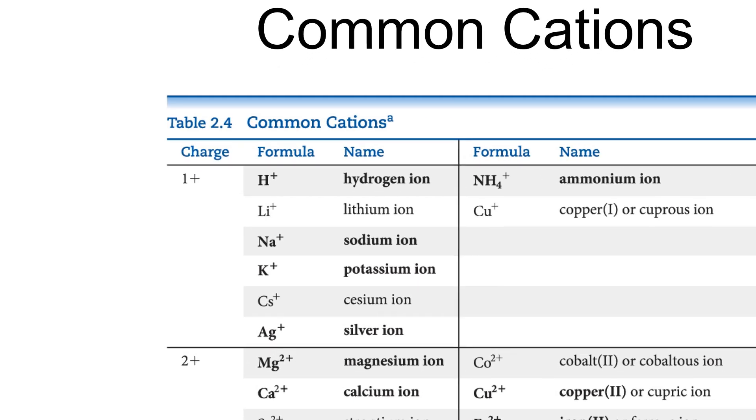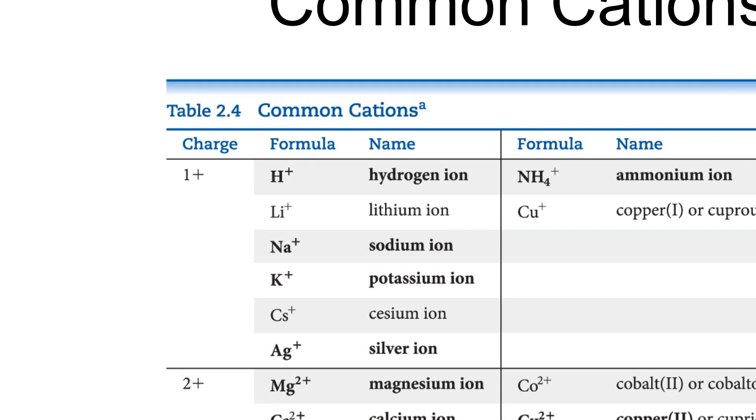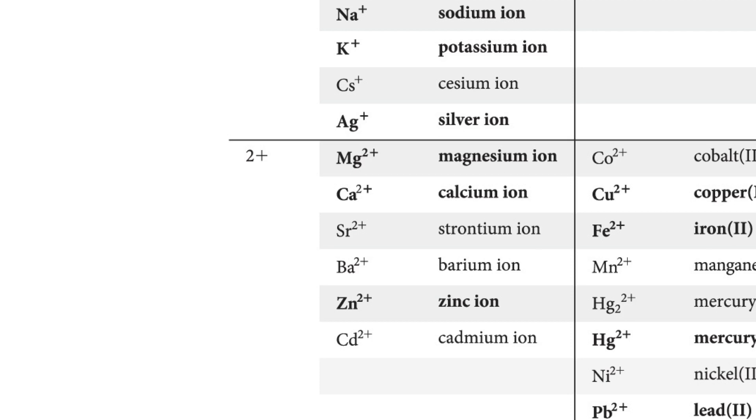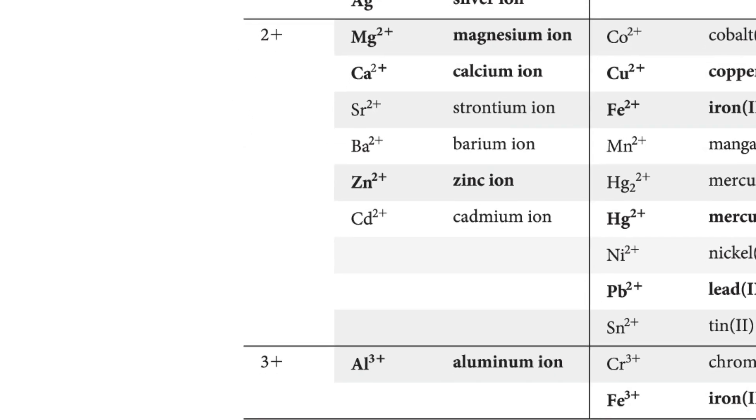So here are some common cations. Here are some positive ones. If you notice, many of these are from the first column, the first group. They all behave alike. So anything in the first group, first column, will tend to give away an electron and become positively one-charged. Likewise, the positive 2, many of those are from the magnesium and the calcium, strontium, barium. These are all from the second column. Not all of them, but many of them are. And it's that second column that they tend to become positive 2. You're going to see the same thing in positive 3. That third column, aluminum, will be positive 3 for that reason.